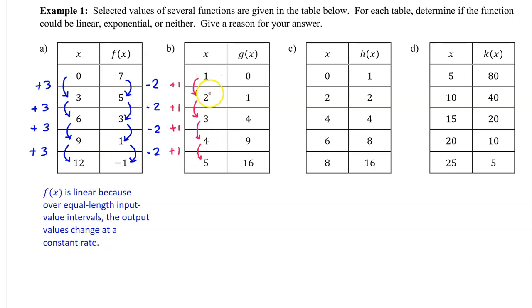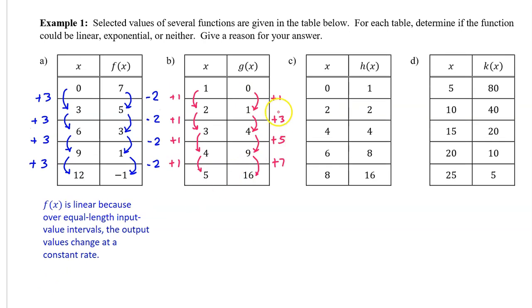Here's the justification the College Board is looking for: f of x is linear because over equal length input value intervals, the output values change at a constant rate. For Part B, we again see equal length input value intervals. Let's check for a common difference — the output values are not changing at a constant rate.